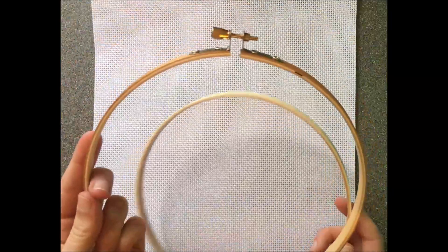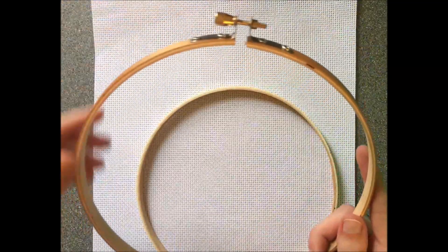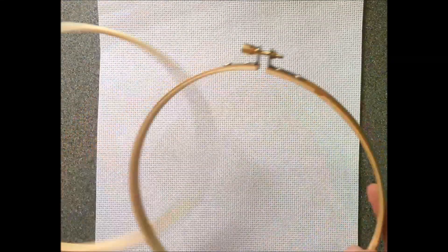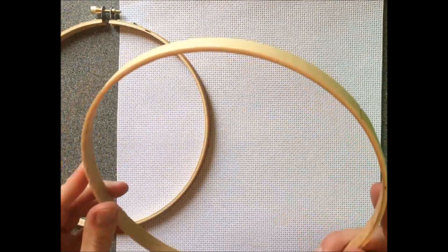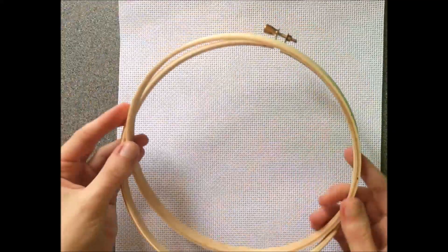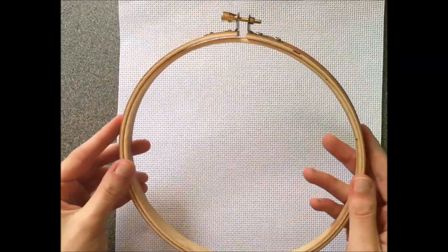So this part with the little screw is the outer hoop and this part is the inner hoop. And as you can see they fit inside each other.